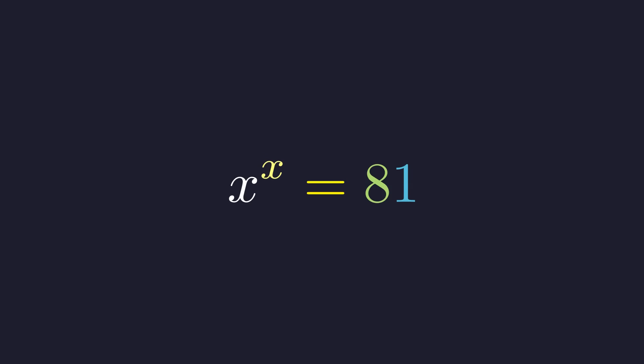We are asked to find a real positive value for x that satisfies the equation x to the power of x equals 81. The constraint that x is positive is crucial for ensuring the function is well-defined. This equation's simple appearance belies a more complex solution.